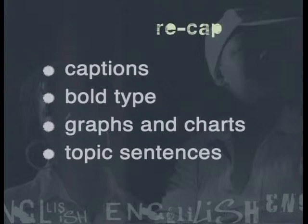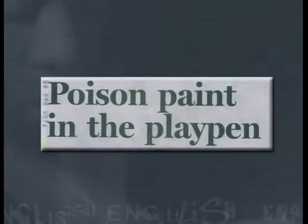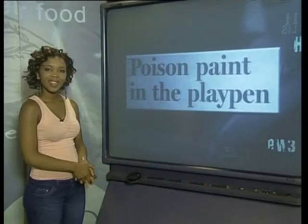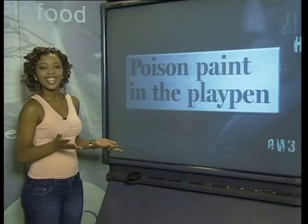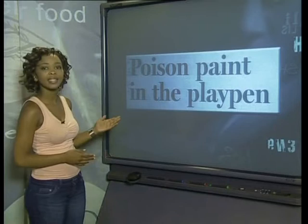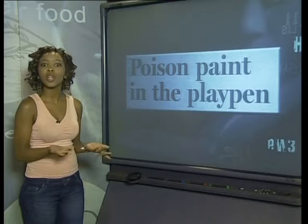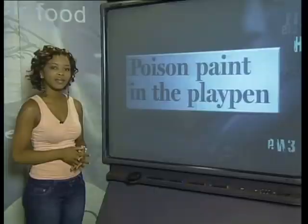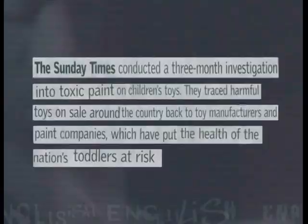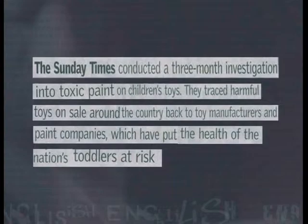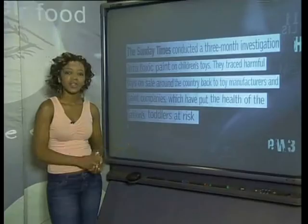So let's try some active reading. We'll begin by examining the heading of a newspaper article. Even without reading the article, there is quite a lot that we can work out from the headline. This article is about poisonous paint, and if it is in play pens which are used by children, then this article must have something to do with children being harmed by paint. Let's have a look at the sub-headline to see if it gives us a bit more detail. The Sunday Times conducted a three-month investigation into toxic paint on children's toys. They traced harmful toys on sale around the country back to toy manufacturers and paint companies, which have put the health of the nation's toddlers at risk. Our guess was right — this article is definitely going to be about harmful paint on toys that are putting children at risk.